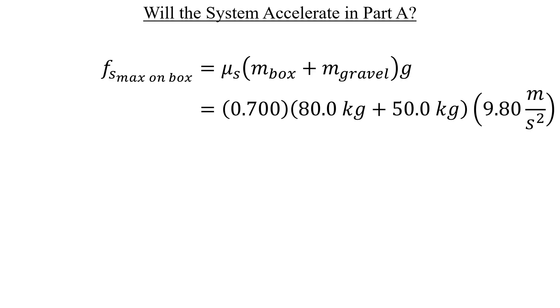Let's calculate the maximum static friction that the roof of the building can exert on the box. Since the gravel is stacked on top of the box, we'll have to include its mass in this calculation. We know all of these numbers. So once you punch them into a calculator, you should get the following value. There's no need to worry about significant figures yet, since we're not using this to answer Part A.